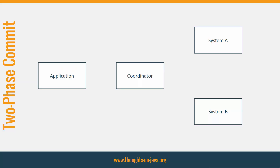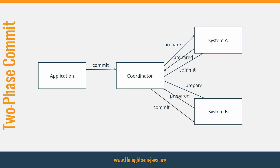The main difference between a local and a global transaction that uses the two-phase commit pattern is the commit operation. As soon as more than one system is involved, you can't just send a commit message to each of them — that would create the same problems as dual writes. The two-phase commit avoids these problems by splitting the commit in 2 steps. The transaction coordinator first sends a prepare command to each involved system. The systems then check if they could commit the transaction. If so, they respond with 'prepared' and the transaction coordinator sends a commit command to all systems. If any system doesn't answer or responds with 'failed', the transaction coordinator sends an abort command to all systems, rolling back all changes.